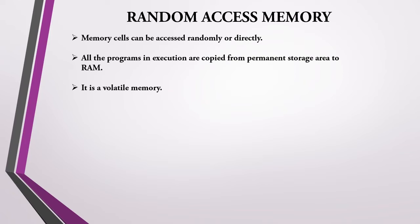What is stored in RAM? All the programs — anything that is to be executed. For example, if we want to work on MS Word, we open that program and it is copied from the hard disk to RAM. Then only we can work on it. The main drawback of RAM is that it is a volatile memory — when the power goes off, the contents of RAM get erased.